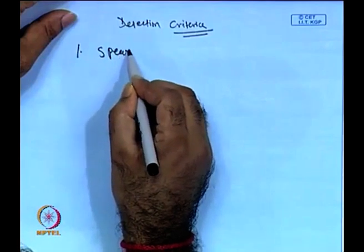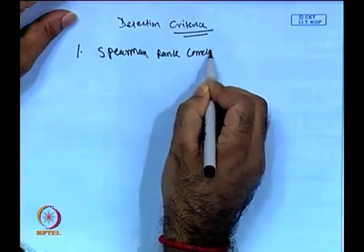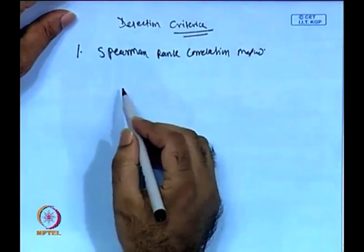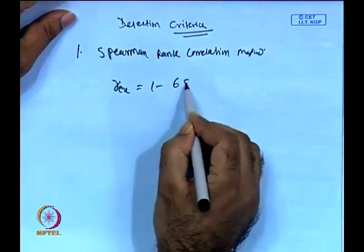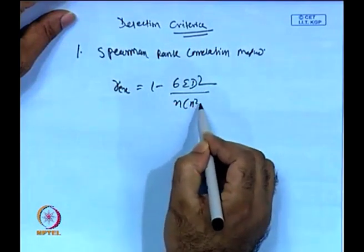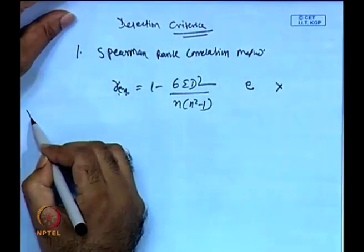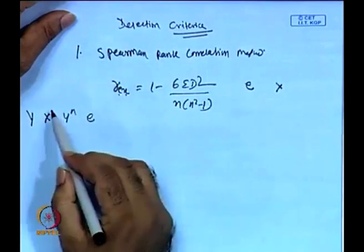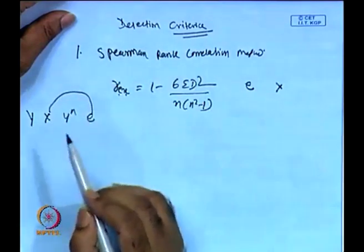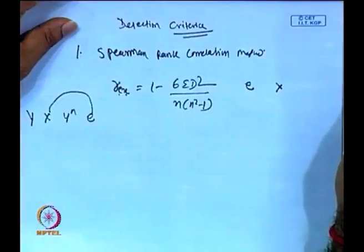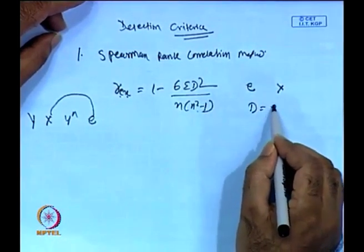One method is called the Spearman rank correlation method. The formula is: r_ex = 1 − (6Σd²) / [n(n² − 1)], where e is the error term and x is the independent variable. We find the correlation between x and e. If there is such correlation — similar to a multicollinearity-type situation — and if that particular correlation is statistically significant, then there is a heteroscedasticity issue.